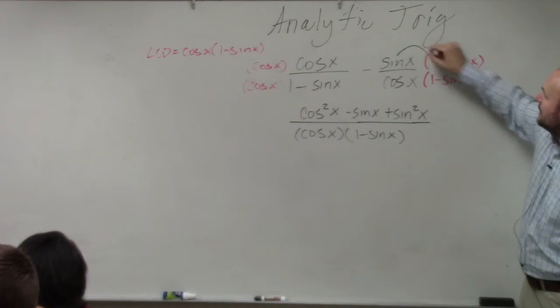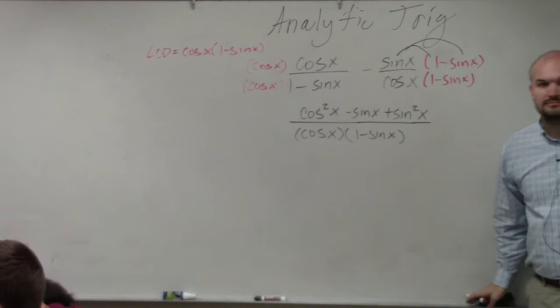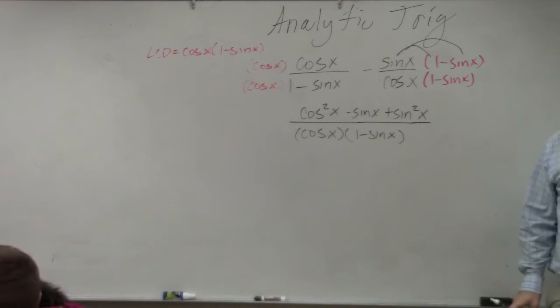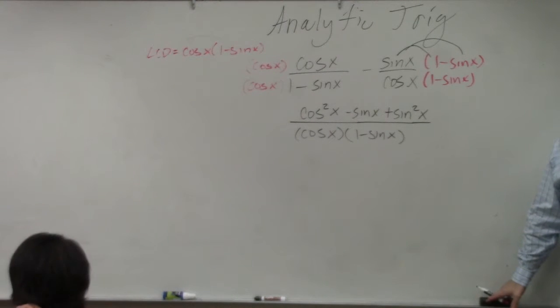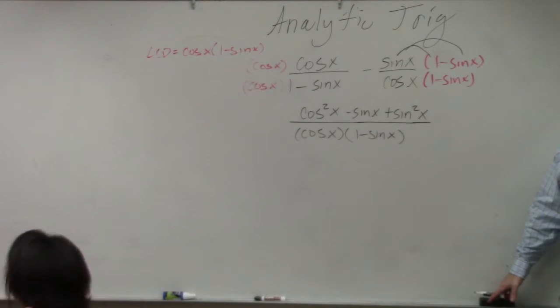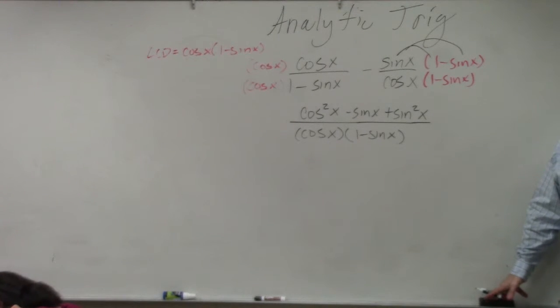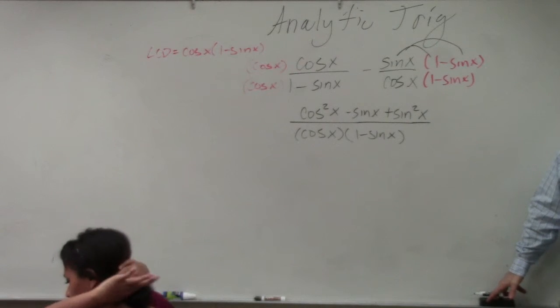So I apply distributive property here. And then here's my denominator as my product. I just apply distributive property. Cosine times cosine is cosine squared of x. Negative sine of x times 1 is negative sine of x. Negative sine of x times negative sine of x is sine squared.